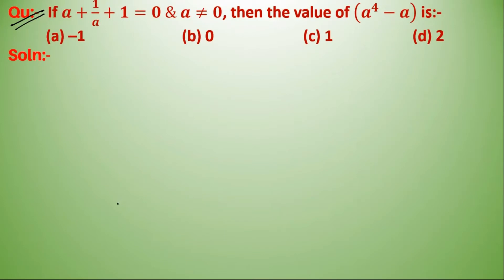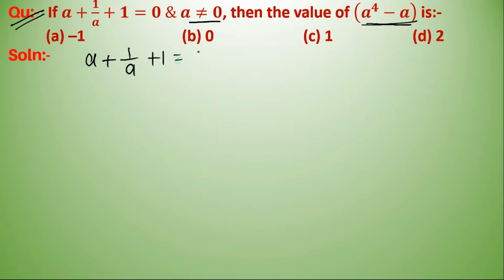The question: if a + 1/(a+1) = 0 and a is not equal to zero, then the value of a to the power four minus a is — given a + 1/(a+1) = 0.